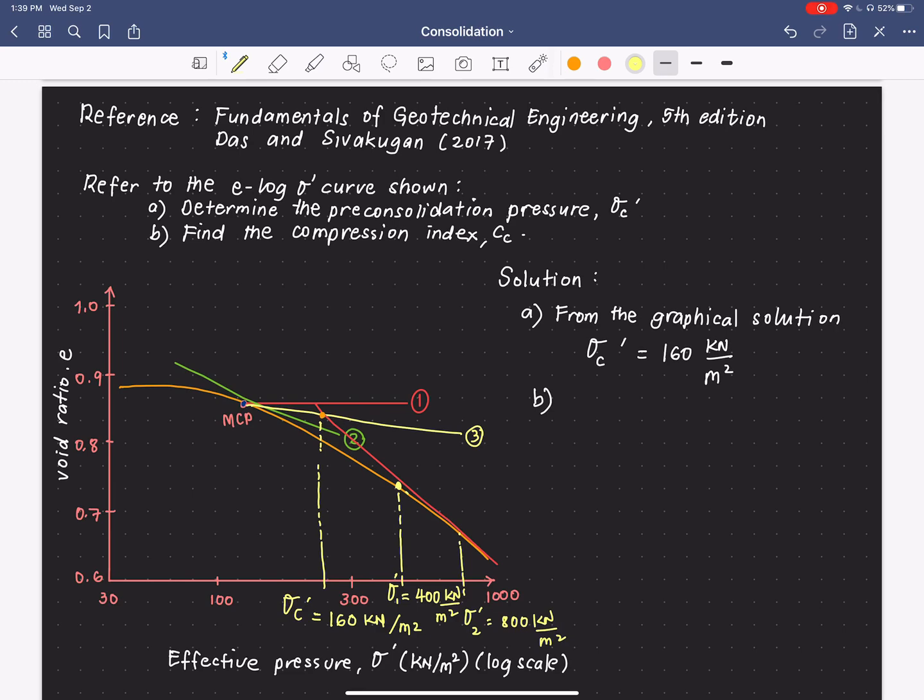And then, we have to get the void ratio at these two values of effective pressure. So, let us say, from this void ratio, we have e1 here as 0.712.